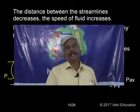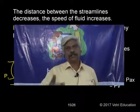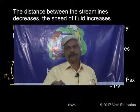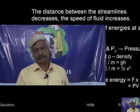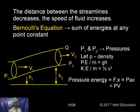If area is less, velocity is more. For example, when we are holding a tube watering plants — if you close the tube, the length of the water stream increases because it has more velocity.